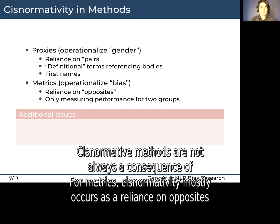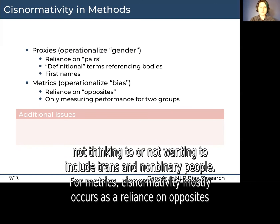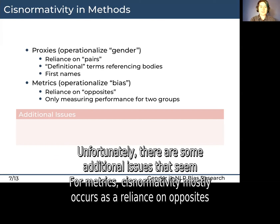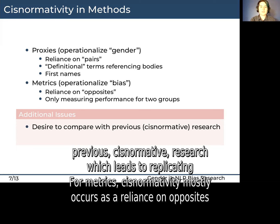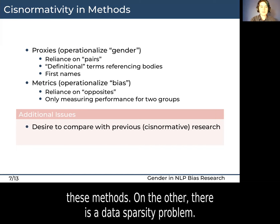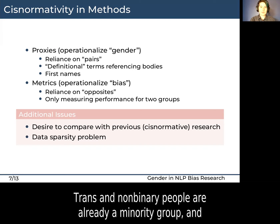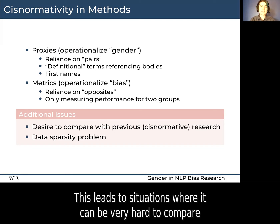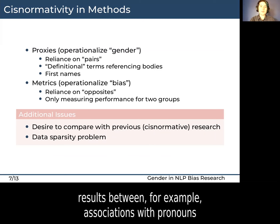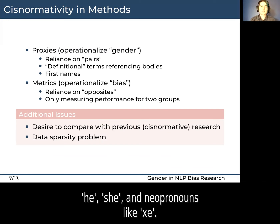Cisnormative methods are not always a consequence of not thinking to include or not wanting to include trans and non-binary people. Unfortunately, there are some additional issues that seem to cause stumbling blocks for researchers. On the one hand, there's the desire for comparison with previous cisnormative research, which leads to replicating these methods. On the other, there's a data sparsity problem: trans and non-binary people are already a minority group and are generally even further underrepresented in datasets. This leads to situations where it can be very hard to compare results between, for example, associations with pronouns he, she, and neopronouns like ze.